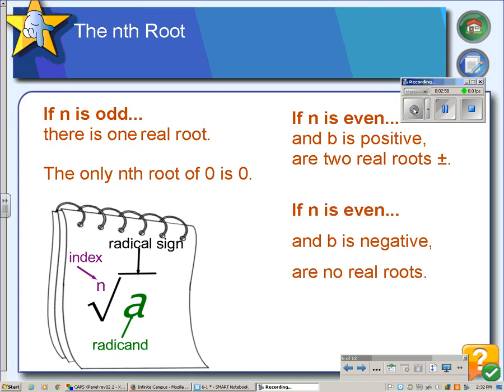So this page summarizes what we just discovered on the previous page, which is if the index is odd, there's only one real root. So if you're doing a cube root, you get one real root. If the index is even, like a fourth root, you get two roots, the positive and the negative root. But if the index is even and the radicand is negative, then you get no real roots because they're imaginary, and we're not doing imaginary.